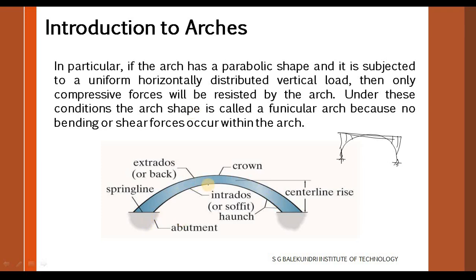This is the component diagram of an arch. The distance from the base up to the top is called the central rise. The support structures are called abutments, and the central top portion is called the crown. The outer surface is called the extrados or back, the inner surface is called the intrados or soffit, and the line connecting the two supports is called the springline.